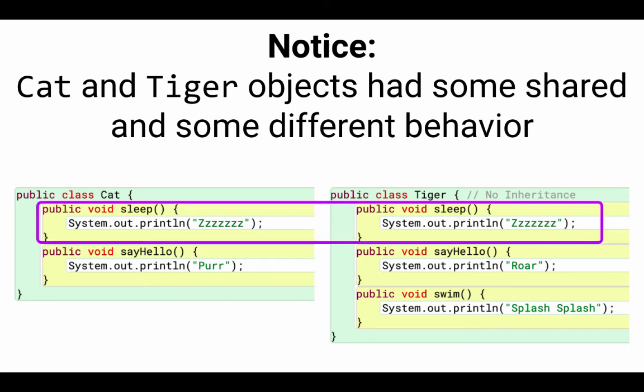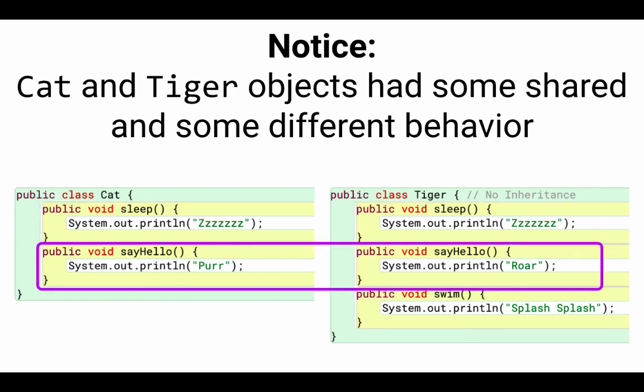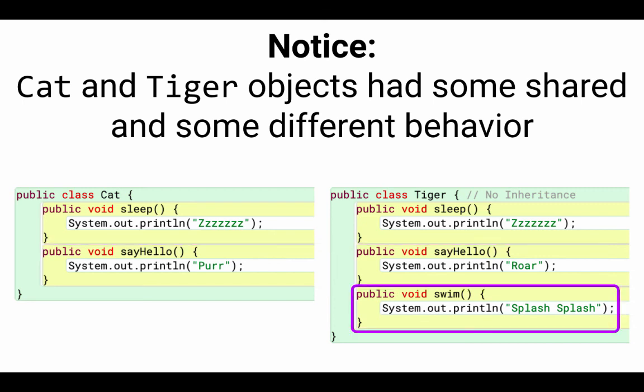So I've got them side by side now. And you can see that the sleep method was identical for the two of them. The sayHello methods were different. So a cat said purr, and the tiger said roar. And then we added an additional method, or we had an additional method in the tiger class that had the swim method.